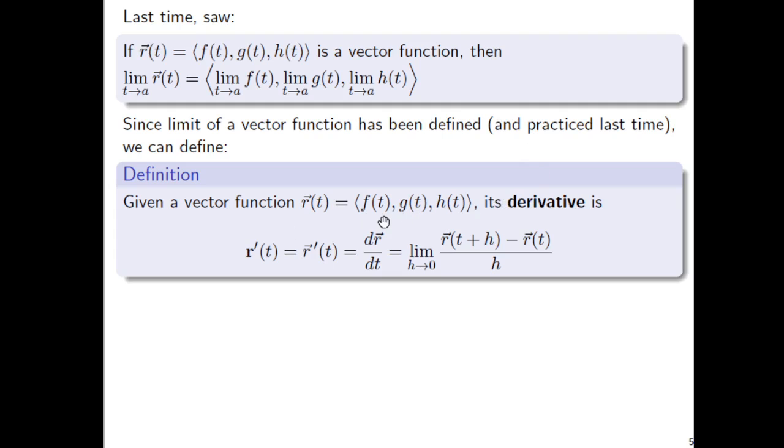So given a vector function with components f(t), g(t) and h(t), the derivative, so r'(t), or r prime whether the r is bold or arrow on top, or using Leibniz notation, dr/dt. It is very similar to the kind of expression you may recall from Calc 1. Limit as h approaches 0 of r(t+h) minus r(t) all over h. So what's going on here is we're trying to compare two different inputs, namely t and t plus h.